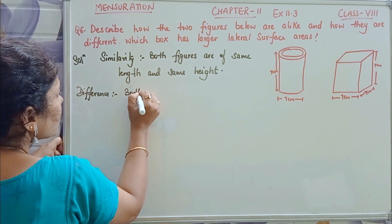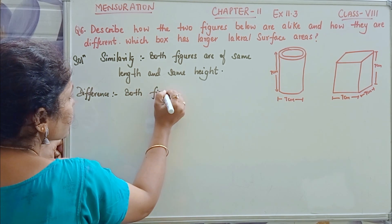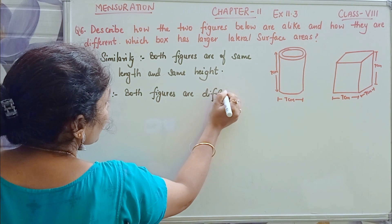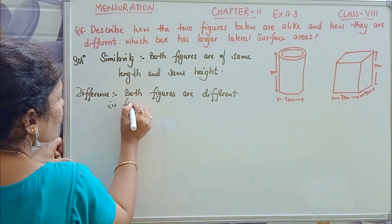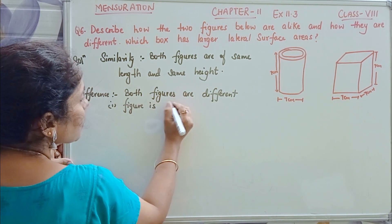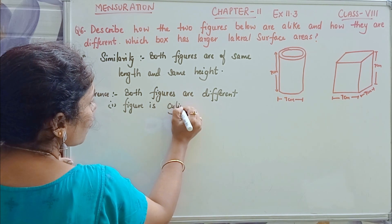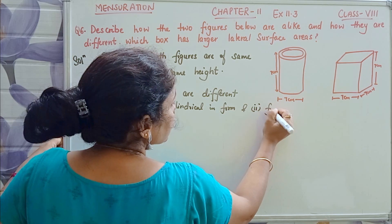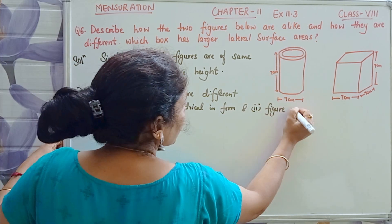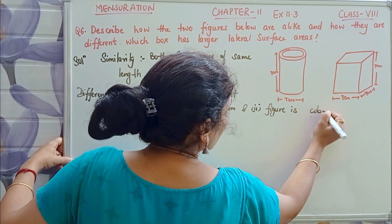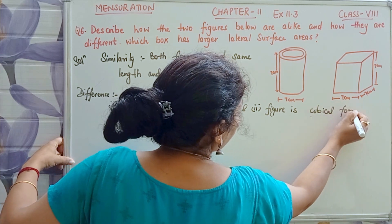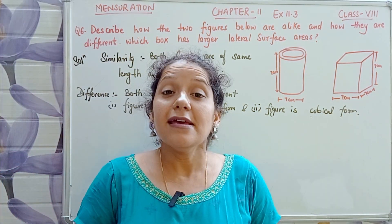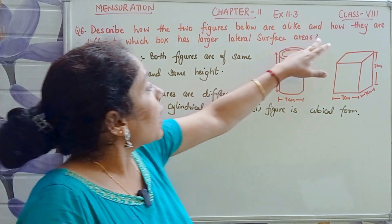Both figures are different. The first figure is cylindrical in form, and the second figure is cubical in form. So that is how they are different.